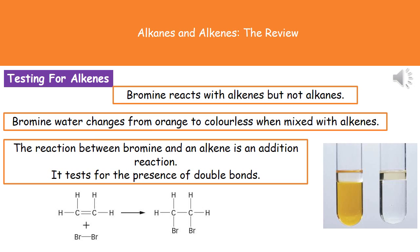The last thing we need to understand is how to test whether a chemical is an alkane or an alkene, and the way we do that is using bromine water. Bromine water will change from its orange colour to colourless if it's mixed with an alkene. What's actually happening is an addition reaction — you can see in the diagram the alkene with its double bond, and bromine being added to it.